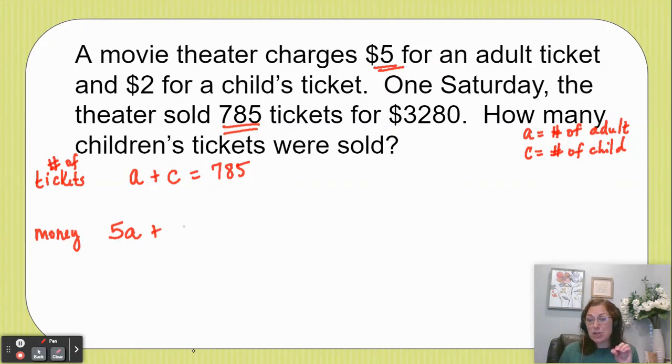We'll do the same for the child, so we were told a child's ticket was $2, so we'll do 2 times the children's tickets, and this should equal the total amount of money we made, which remember was $3280.